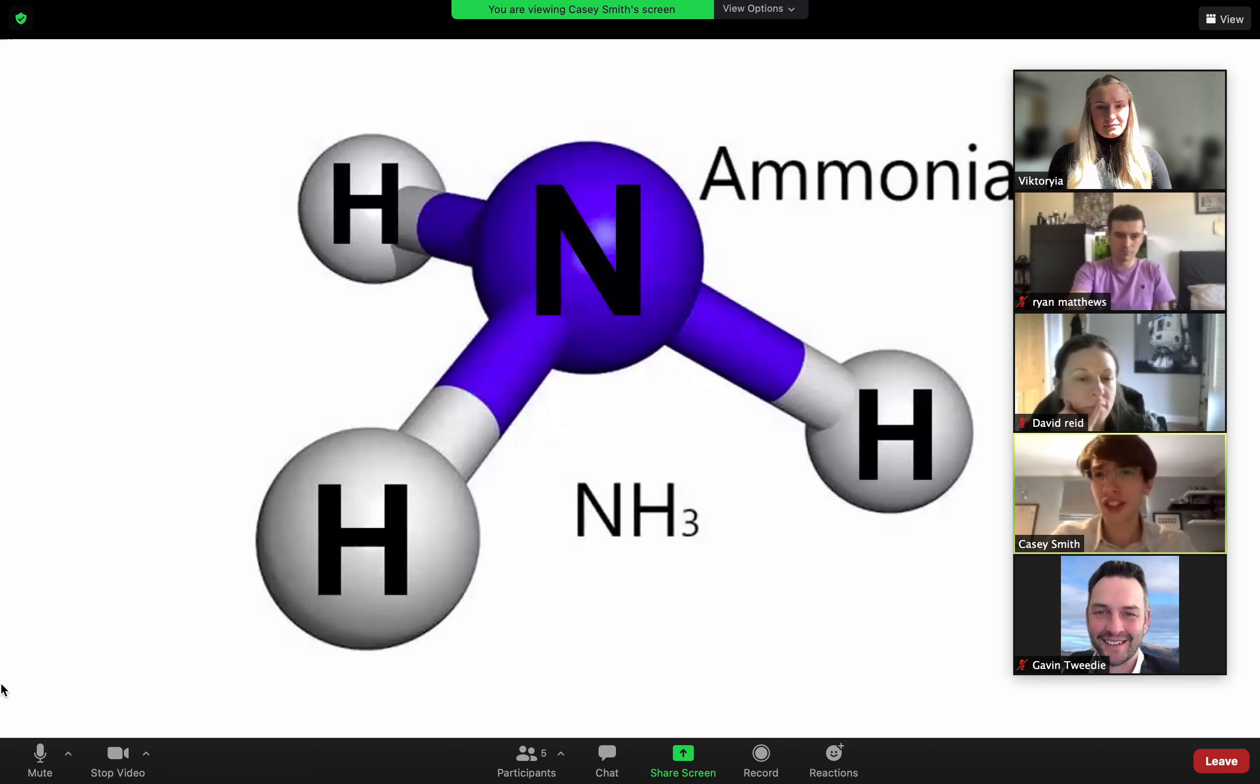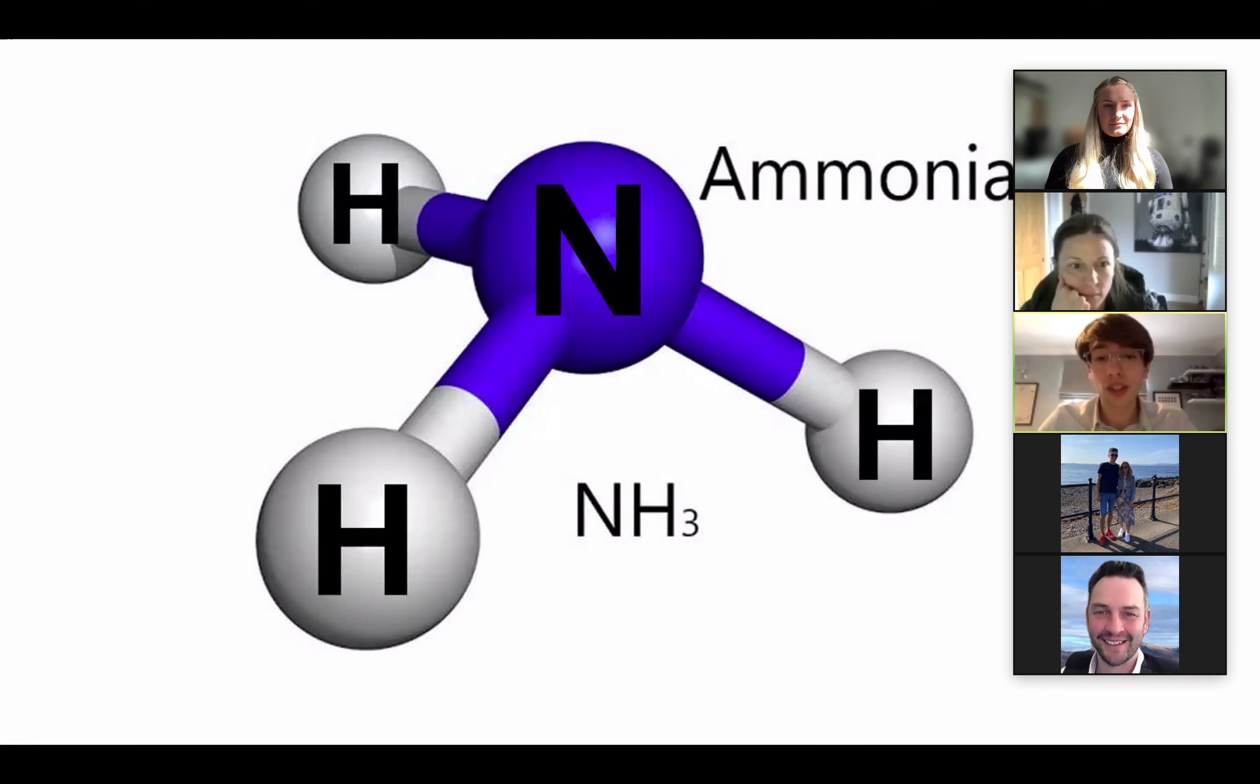So what is ammonia? Well, it's a naturally produced gas comprised of one nitrogen atom bonded with three hydrogen atoms. The result is NH3 shown here.